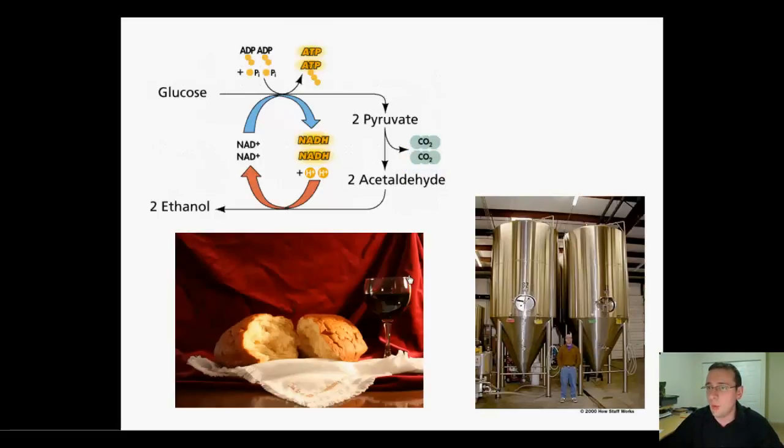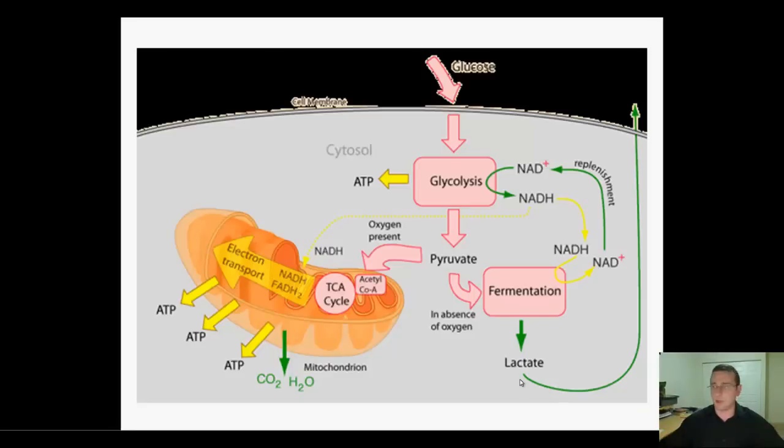This is what the cell does as an emergency thing: yeast fermentation or lactate fermentation depending on if you're an animal or yeast. Let's review the process of cellular respiration. First the sequence is glycolysis, and if you have air you go into the Krebs cycle through grooming and then ETC. If you don't have air you go into fermentation.